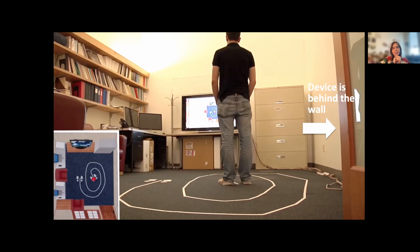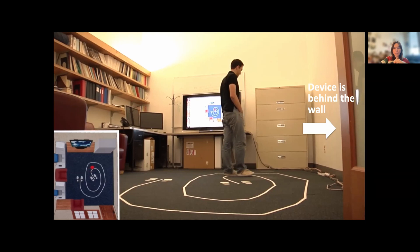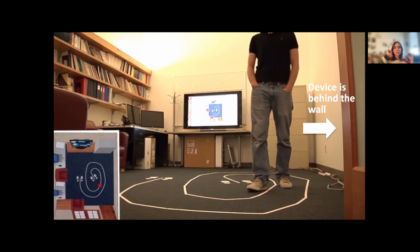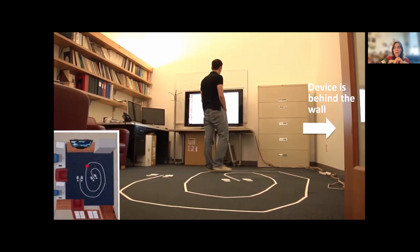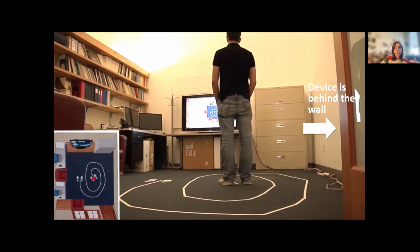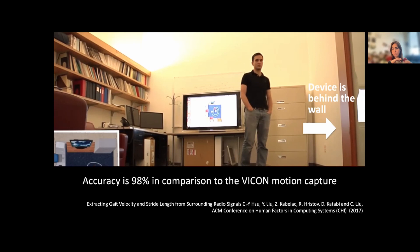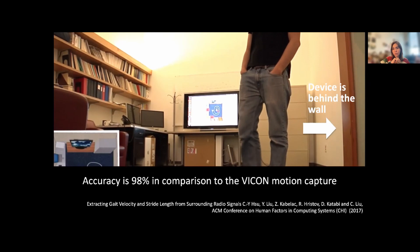Here you see one of my students in one of our offices at MIT. Our device is not even in the same office — we monitor him through the wall by leveraging the fact that every movement he takes changes the electromagnetic waves around him. The red dot shows where the device thinks he's standing. As he moves, the red dot moves with him — completely passive. We compare this to the Vicon motion capture gold standard and show our tracking is highly accurate.